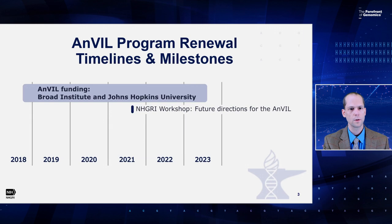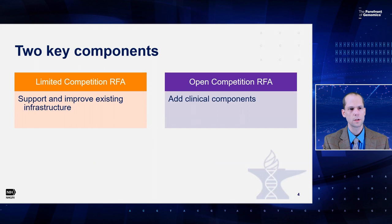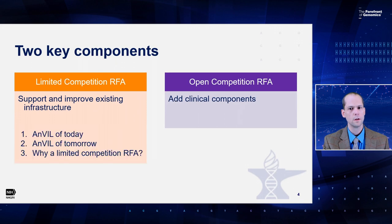In order to evaluate the progress and gather input on a potential renewal, NHGRI held a workshop on the future directions of the ANVIL in October of 2021. The outcomes of that workshop were presented during our last council meeting this past February, and also further discussed with the Genomic Data Science Working Group of Council. And now here we are in May, bringing to you a concept clearance. This concept clearance has two components, each its own RFA: first, a limited competition RFA to support and improve the existing infrastructure.